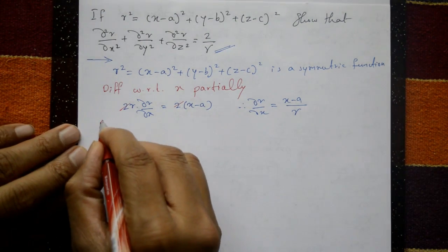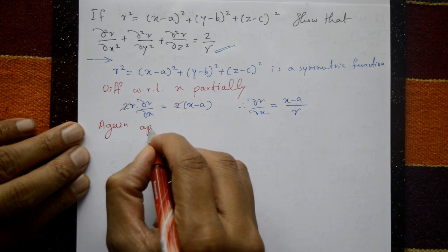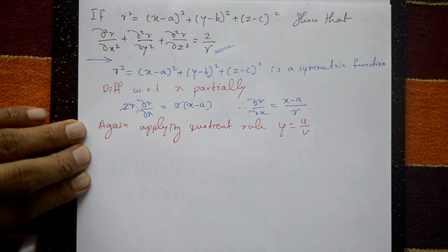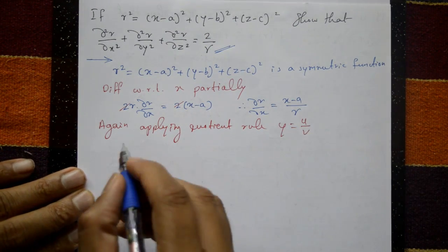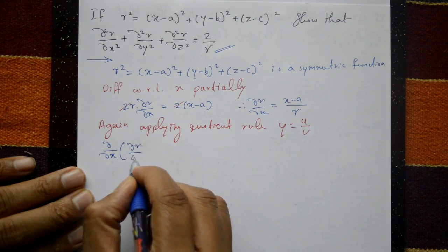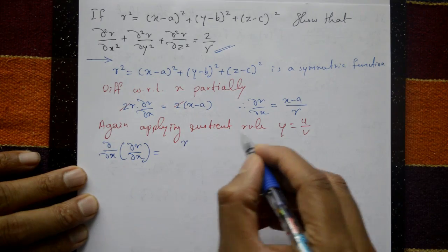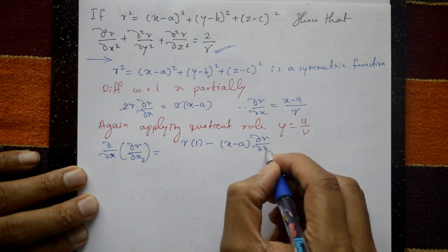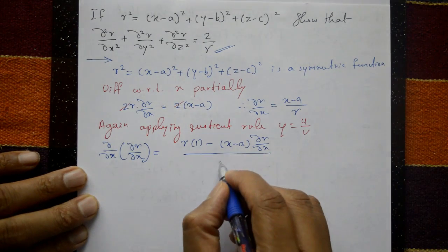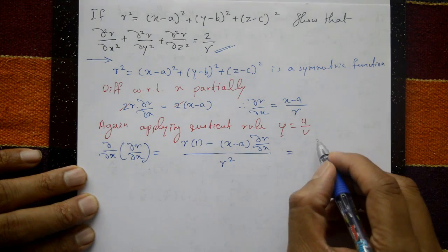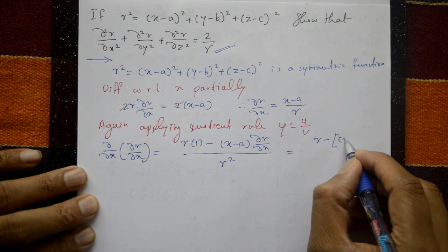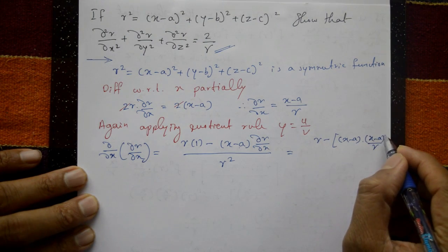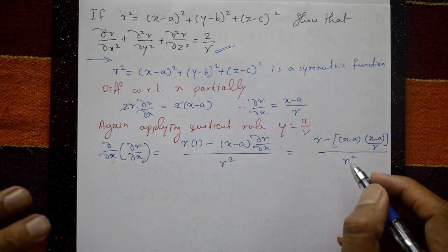Now we need ∂²r/∂x², so differentiate again using the quotient rule. Applying the quotient rule: ∂²r/∂x² = [r · 1 - (x - a) · ∂r/∂x] / r². Substituting ∂r/∂x = (x - a)/r, the numerator becomes r - (x - a) · (x - a)/r.